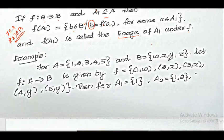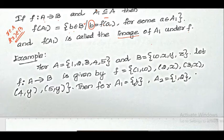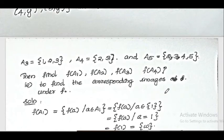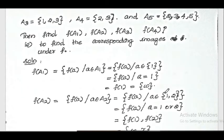First question: let A equal to the set {1, 2, 3, 4, 5} and B equal to {w, x, y}. Define a function f from A to B given by the relation f equal to the set of ordered pairs {(1,w), (2,x), (3,x), (4,y), (5,y)}. For subsets A1 = {1}, A2 = {1,2}, A3 = {1,2,3}, A4 = {2,3}, and A5 = {2,3,4,5}, find f(A1), f(A2), f(A3), f(A4), and f(A5).